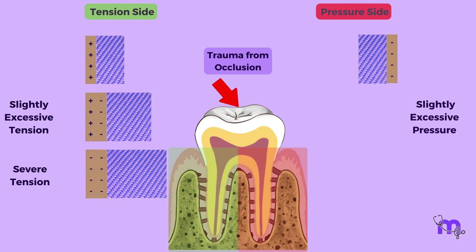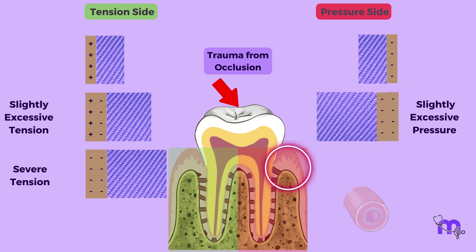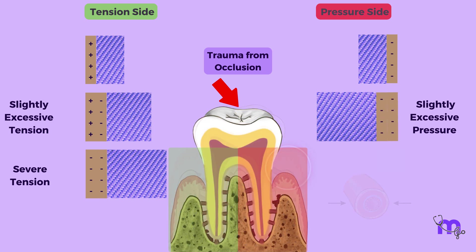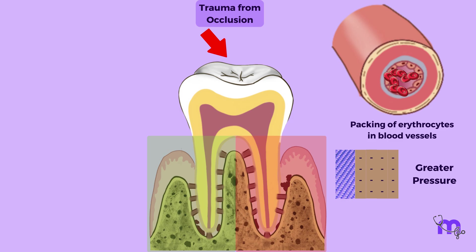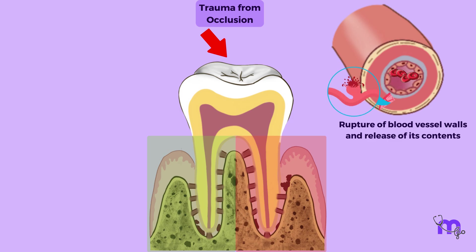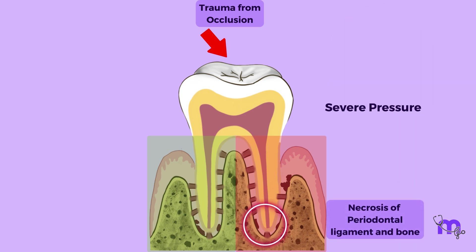In areas of greater pressure, compression of periodontal ligament fibers, increased alveolar bone resorption, packing of erythrocytes in blood vessels, and rupture of blood vessel walls with release of their contents are noted. In areas of severe pressure, the tooth root gets forced against the bone, resulting in necrosis of the periodontal ligament and bone.